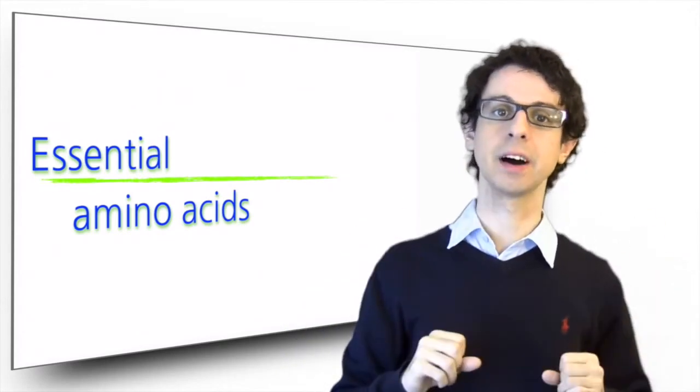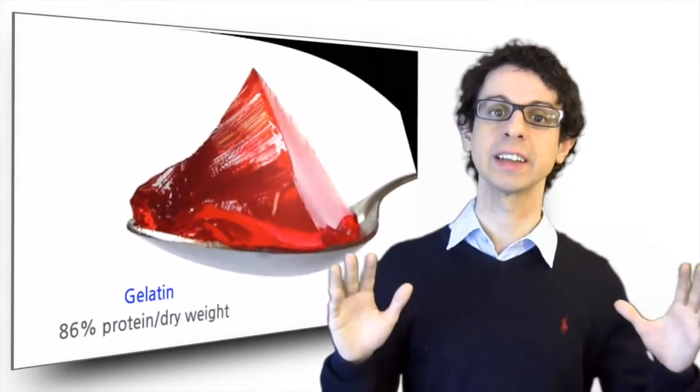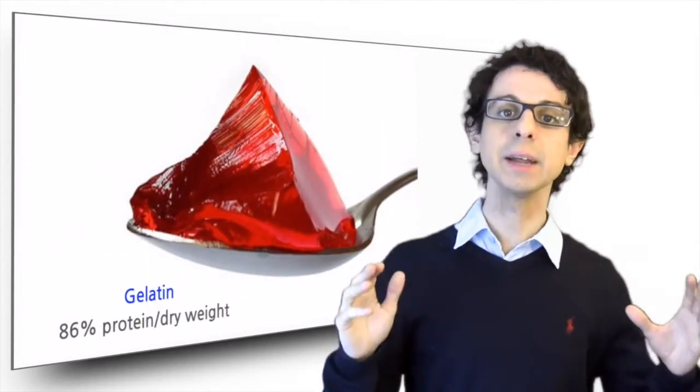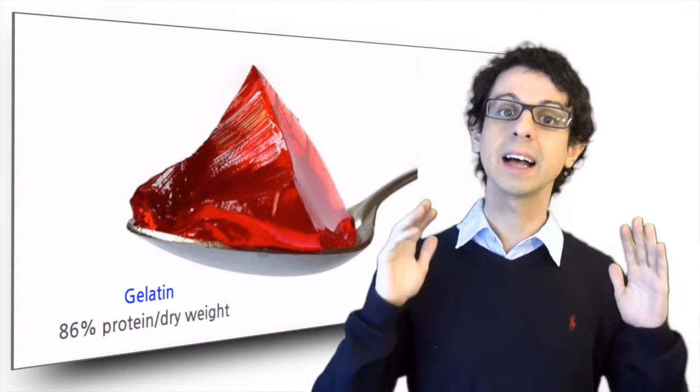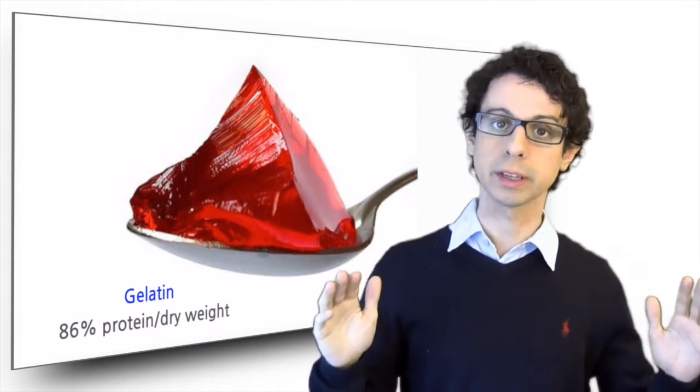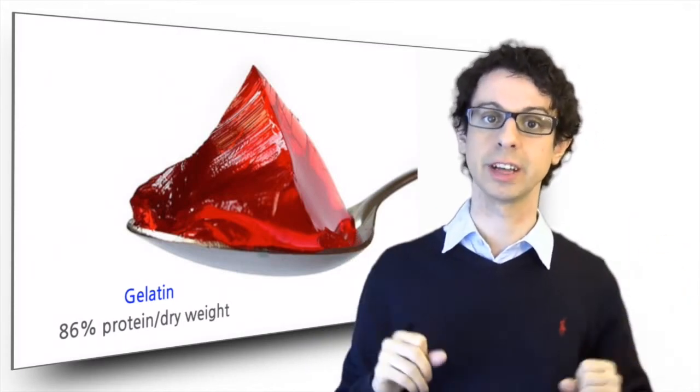And he thought he had found a wondrous solution: gelatin. Gelatin is an animal source of proteins, and it has a lot of them, 86 grams of proteins per 100 grams of dry gelatin.